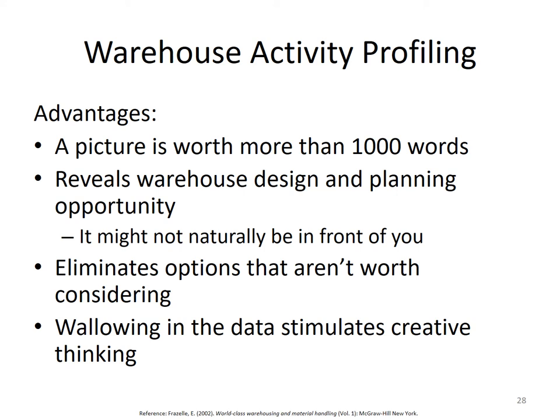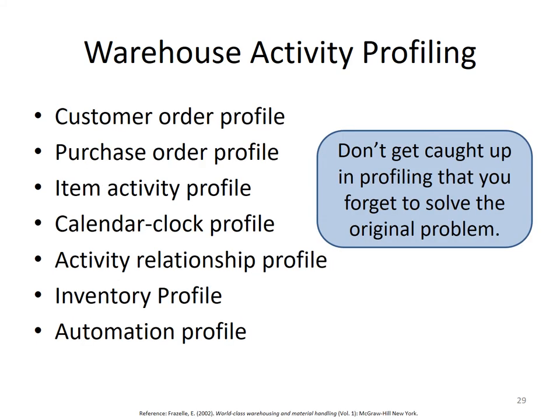This kind of profiling saves cost, stimulates creative thinking, and reveals warehouse design and planning opportunities. There are many types of activity profiling: customer order profile, purchase order profile, item activity profile, active relationship profile, inventory profile, automation profile, and more. However, our main objective is not just to draw profiles — our main objective is to analyze inventory conditions and take decisions to improve warehouse performance.